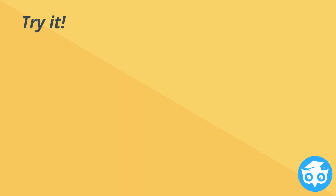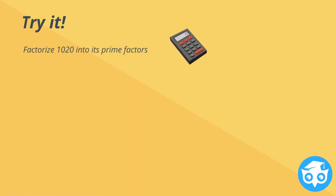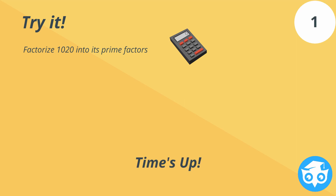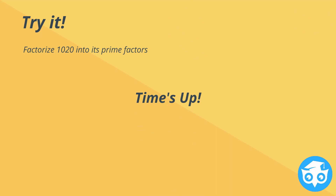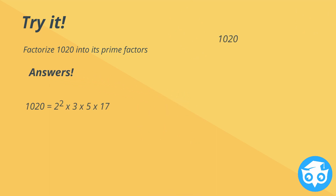Try it! Factorize 1020 into its prime factors. Calculators are locked — please pause the video. Time's up! Here are the answers. 1020 could be split into 2 and 510. 510 could be split into 10 and 51. And the rest, you know it.